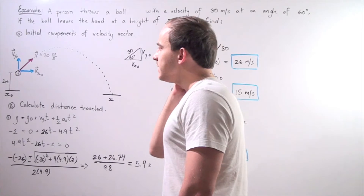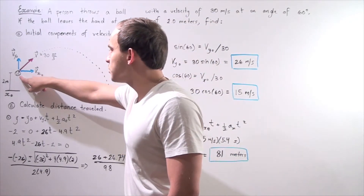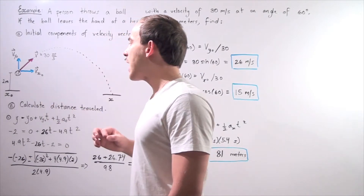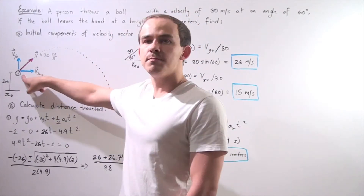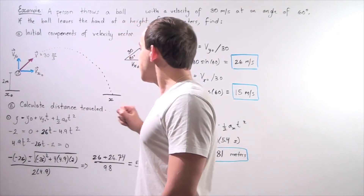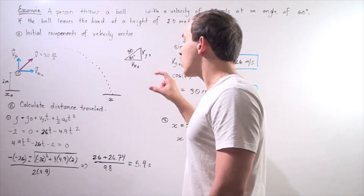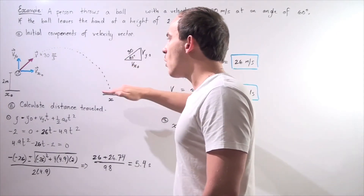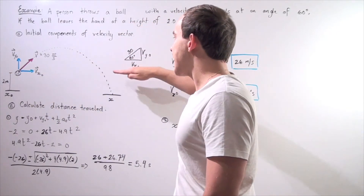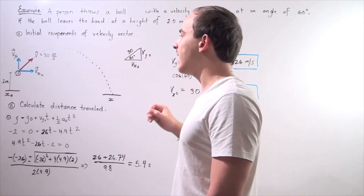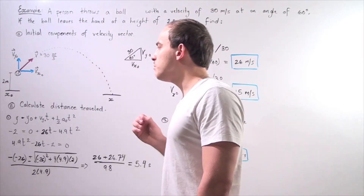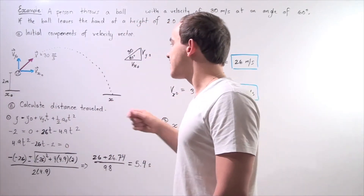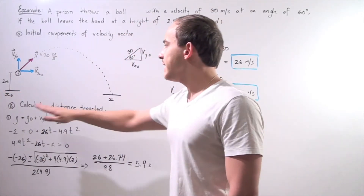Our ball begins at the following position, so this is y-naught, and it's 2 meters above the ground, so we're going to choose y-naught at this point to be 0. That means at our final point, our y-final is negative 2 meters — it's 2 meters below our initial position. Our initial x-naught is 0, and our final x is what we're trying to find in part B.